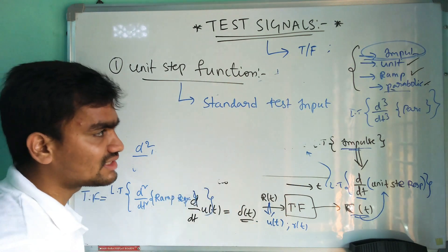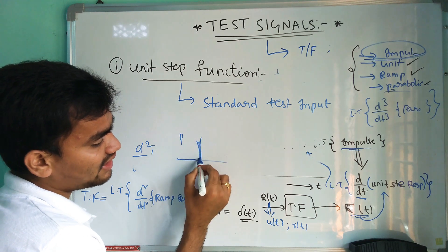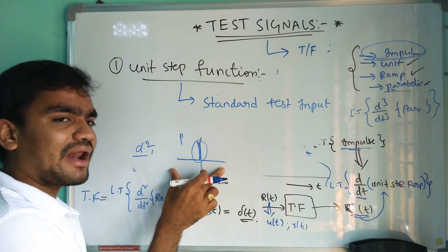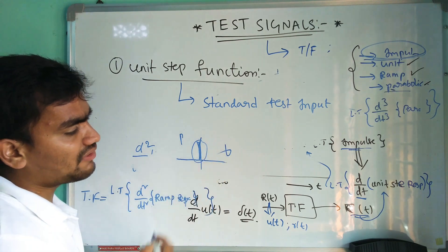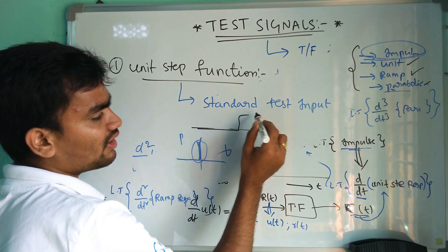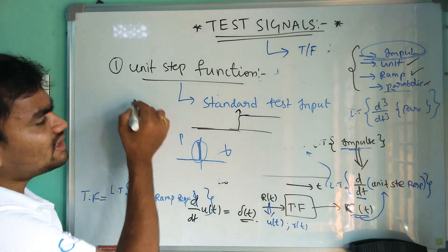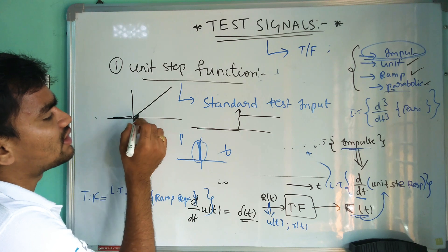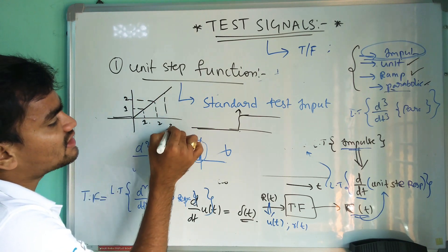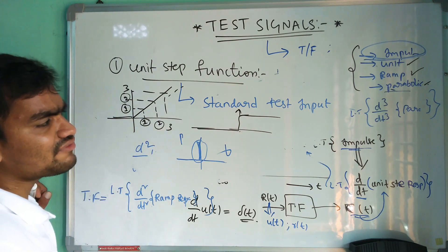Why is the unit step function called the standard test signal? The impulse function has a very large value at t equal to 0 and is 0 for t greater than 0, which is not practically achievable. The unit step function, however, can be practically realized since its value is 1 and remains at 1 for some time. The ramp function requires synchronization where for x equal to 1 the y value must also equal 1, for x equal to 2 the y value must be 2, and so on — this synchronization is very tough to achieve in real life.